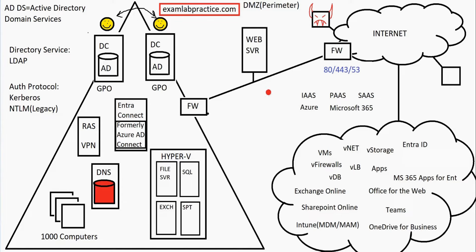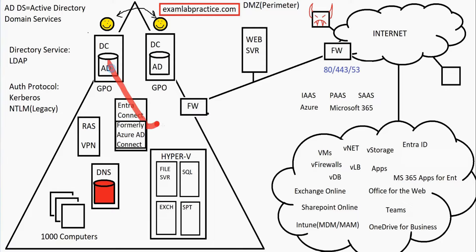If you are a company that's been around for a while with a traditional on-premise domain, and you're starting to move into the cloud, you can set up Entra Connect — formerly Azure AD Connect — or Entra ID Sync, the lighter weight version, and have things synchronized out to the cloud.